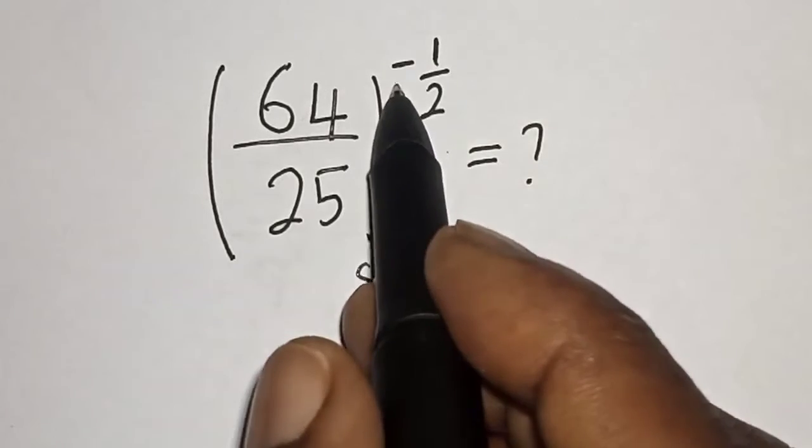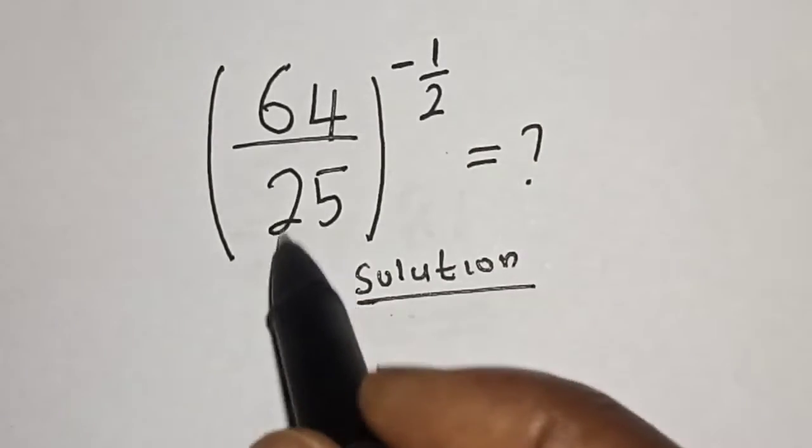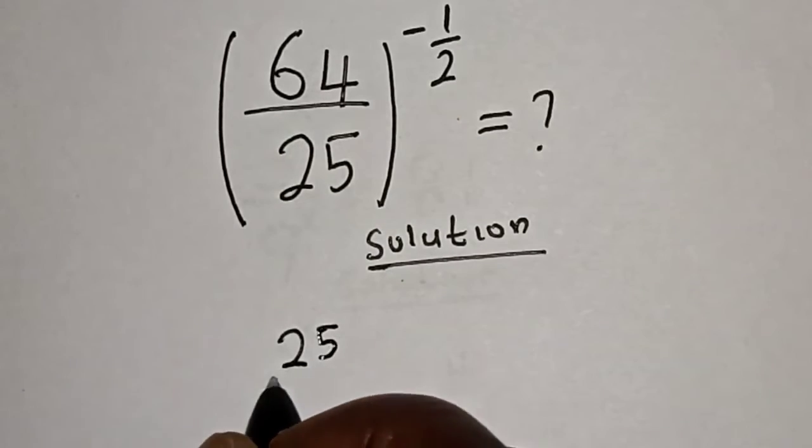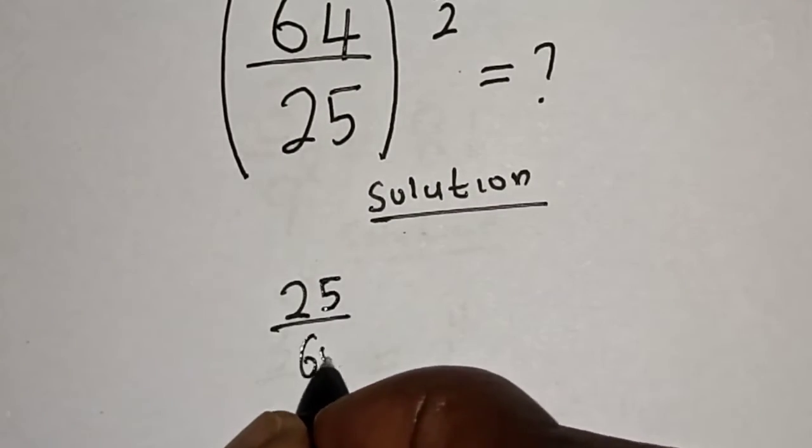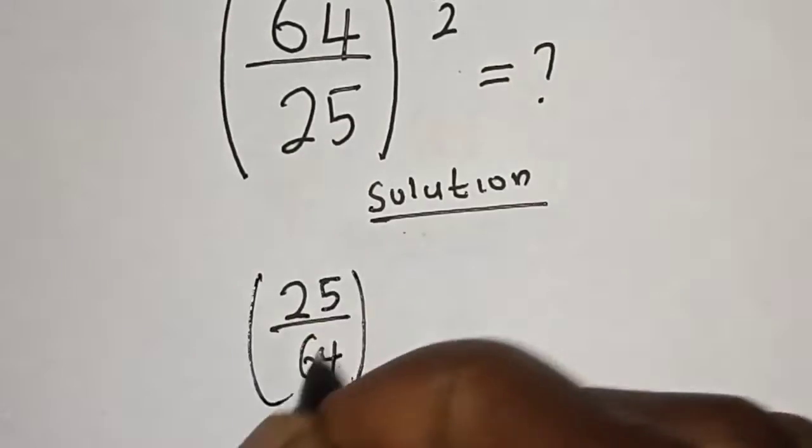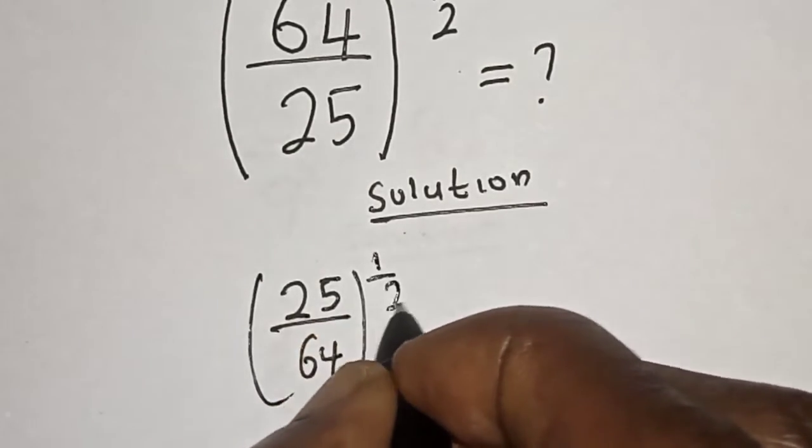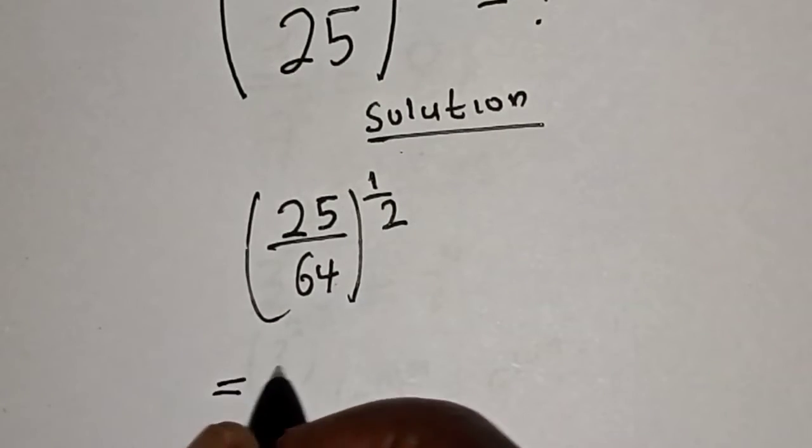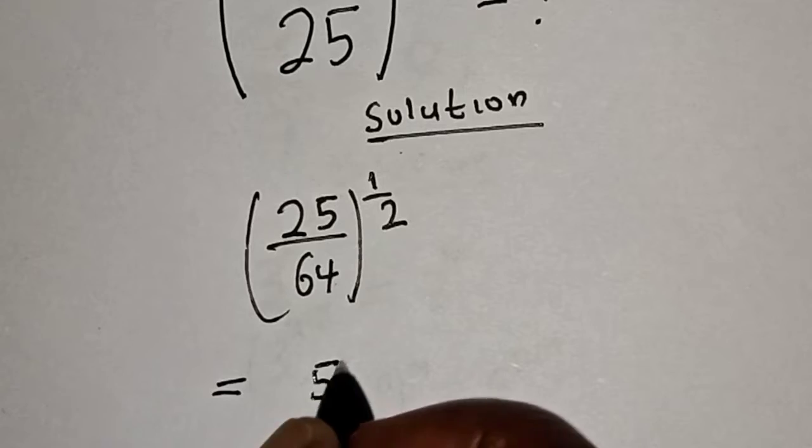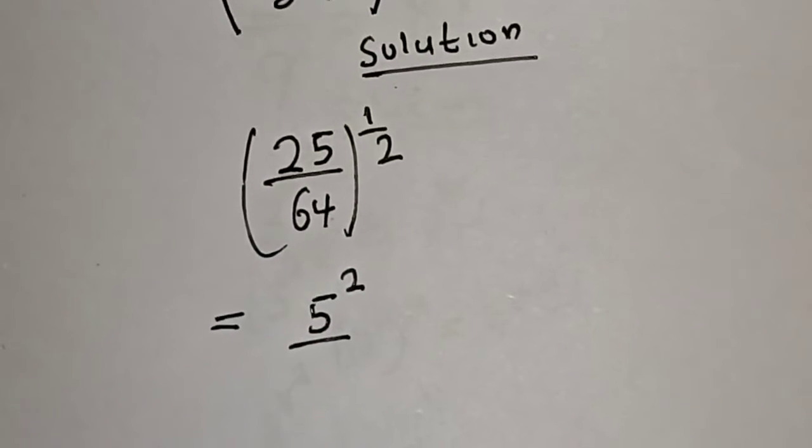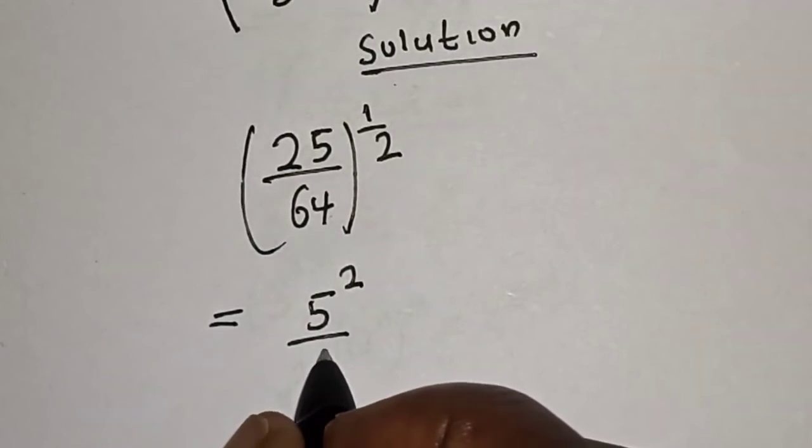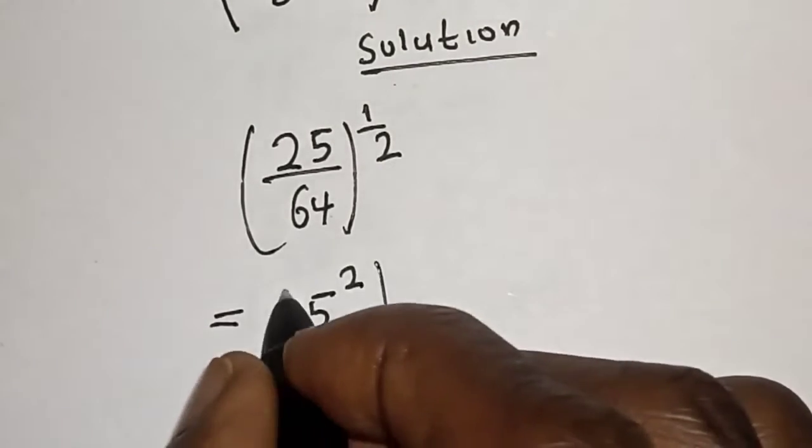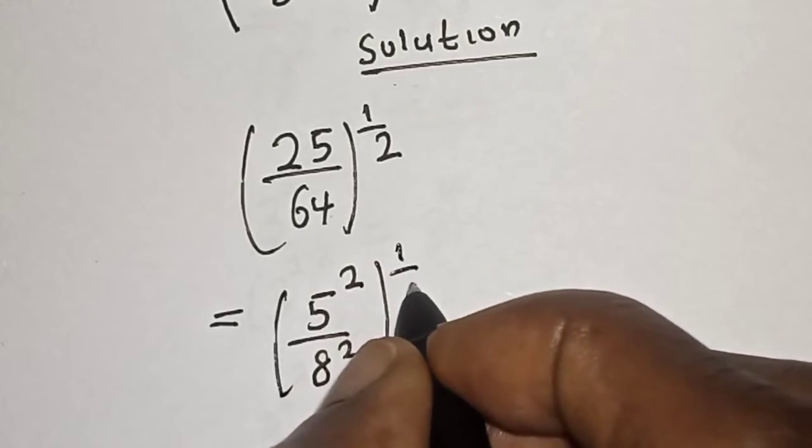In order to remove this negative, we have to transform this. That is, 25 divided by 64 to the power of 1/2. Then, 25 is 5 squared, divided by 64 which is 8 squared, all raised to the power of 1/2.